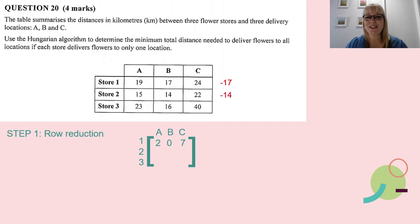Now I need to move on to row 2, find the smallest number there which is 14. I'm going to take 14 away from each of those numbers: 15 take away 14 gives me 1, 14 take 14 gives me 0, and 22 take 14 gives me 8. Moving on to the last row for row reduction, the smallest number is 16, so I'm taking 16 away from each: 23 take away 16 gives me 7, 16 take away 16 is 0, and 40 take away 16 gives me 24.